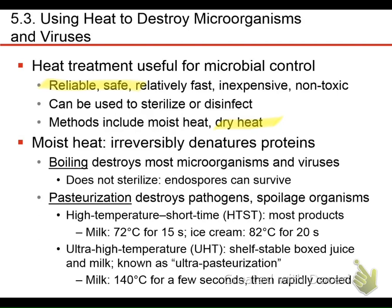We use dry heat in the lab to sterilize those loops, but when we combine heat with moisture it actually works much more effectively. You can use lower temperatures to sterilize when you use moist heat. Moist heat basically denatures proteins. When you use the Bunsen burner, you burned up everything in those cells. Moist heat doesn't get that hot — it causes proteins to denature. Remember from the growth curves for mesophiles and thermophiles, the growth curve drops off quickly because proteins are denaturing. Once they're denatured, they're no longer functional — that's what moist heat does too.